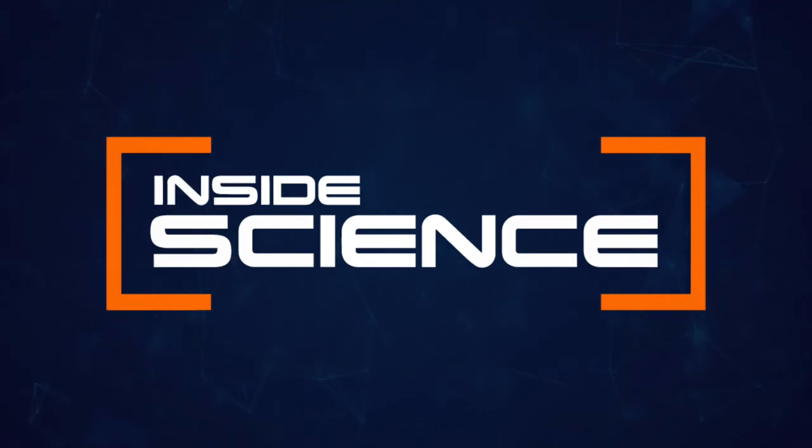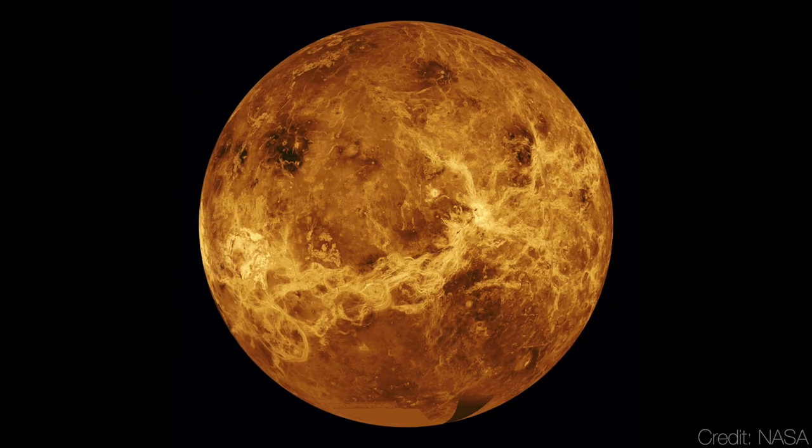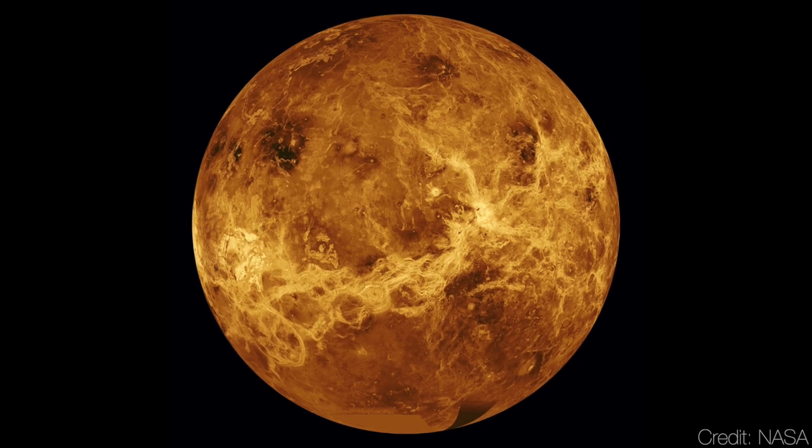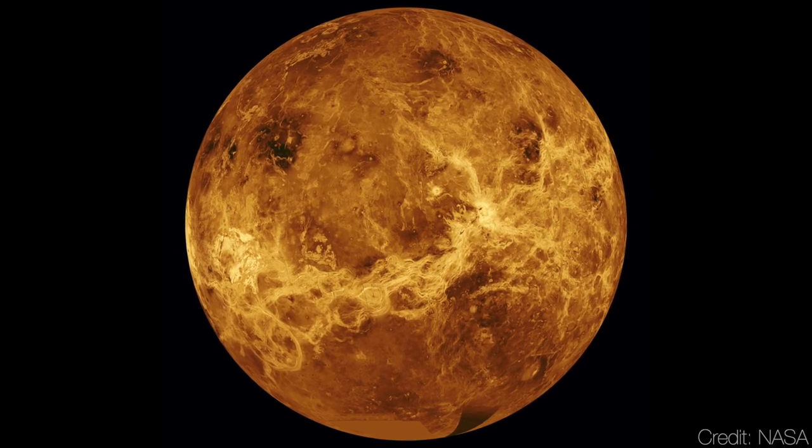Inside Science. The planet Venus. 900 degrees Fahrenheit at the surface, raindrops of 90% sulfuric acid, and now signs that hint at possible life.